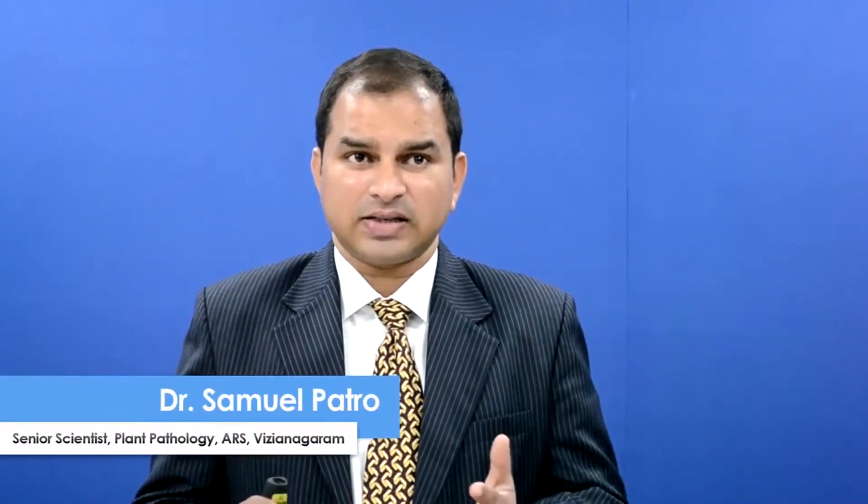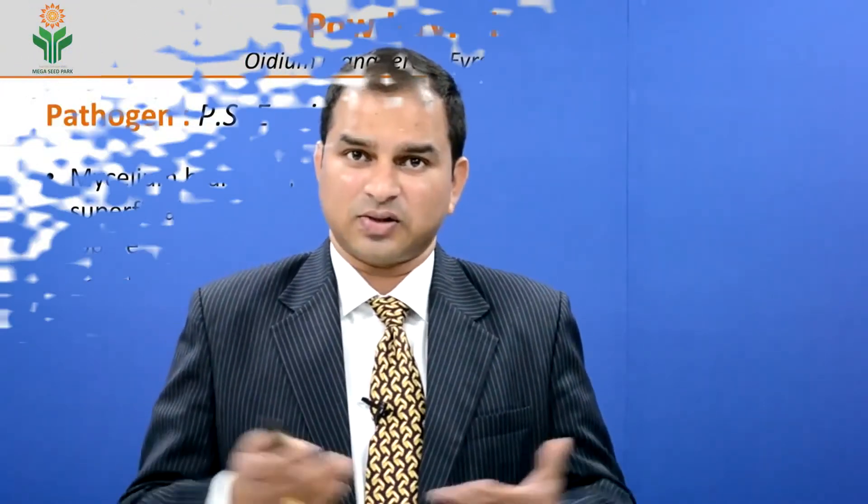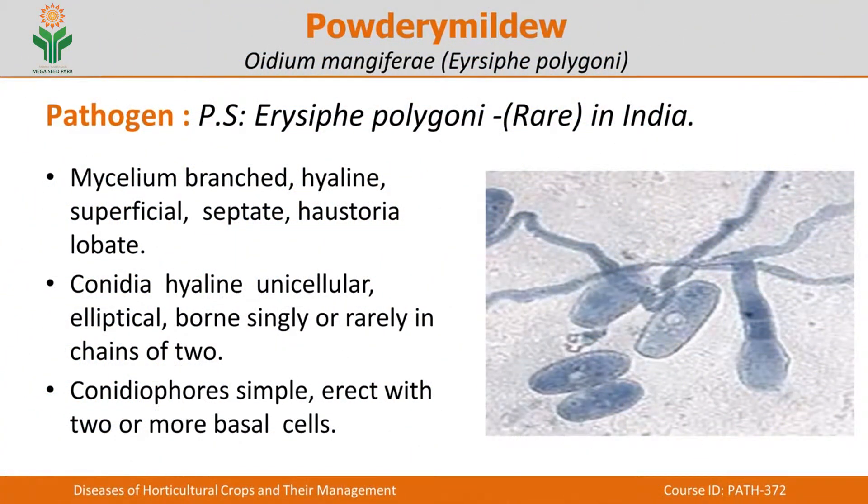The fungal mycelium is branched, hyaline (meaning colorless), and superficial. It is septate — there are septa in between the mycelia. Even though the fungus grows on the superficial layers of the host, it produces haustoria. The haustoria go inside the tissue and absorb all the nutrients, minerals, and water from the plant.